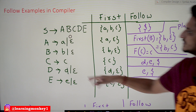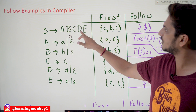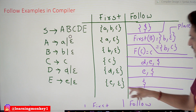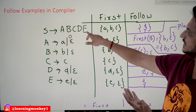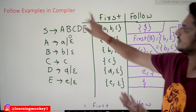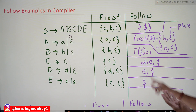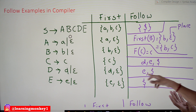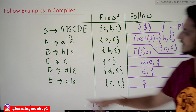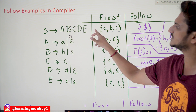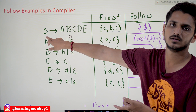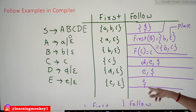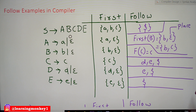Next is FOLLOW of D. FOLLOW of D means FIRST of E. FIRST of E is {e, epsilon}. If you place epsilon here, we get FOLLOW of S, which is dollar. So FOLLOW of D is {e, $}. Now calculating FOLLOW of E — after E there is nothing on the right-hand side, so it equals FOLLOW of S. FOLLOW of S is dollar. So FOLLOW of E is {$}. This is how we calculate the FOLLOW symbols.